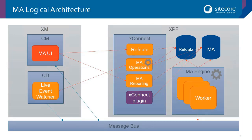Looking at the architecture of marketing automation — slightly simplified but highlighting the important pieces — there are two parts: XM and XPF. XM is the world you're used to, where we have the CM and CD roles. On the CD role you have the campaign designer, the marketing automation UI, and the live event watcher.